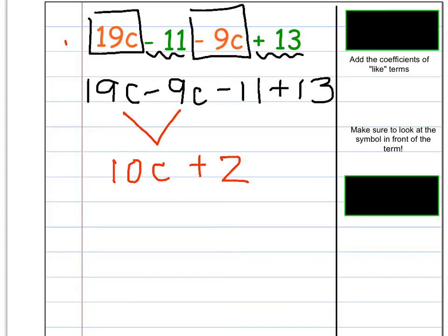I can see that I would have 10C left over. And then when I take the whole numbers, negative 11 plus 13, I would have 2. And see how I went from this, which is kind of somewhat long, down to this, which looks way, a whole lot simpler to me.